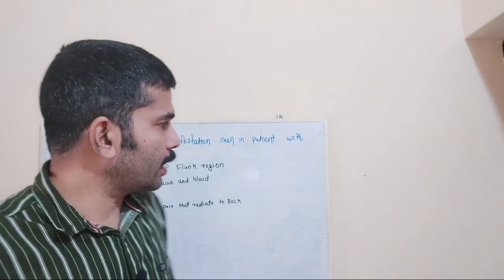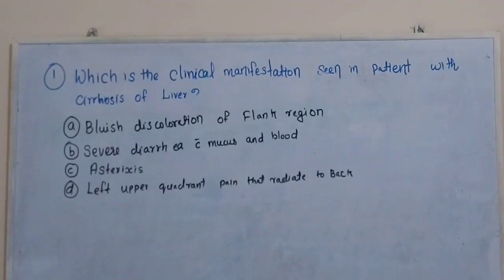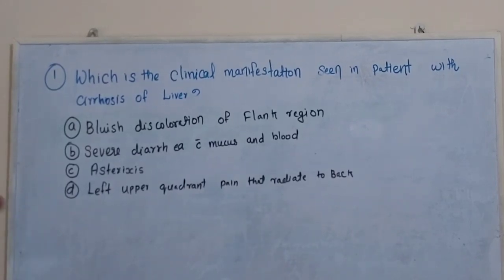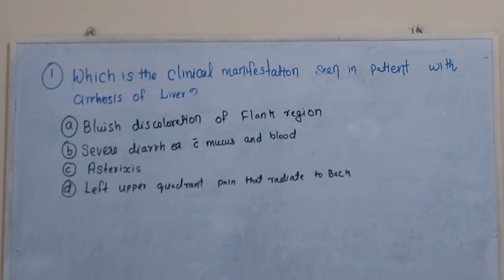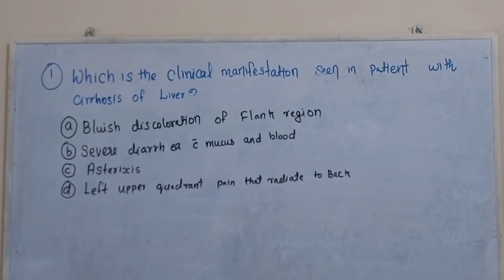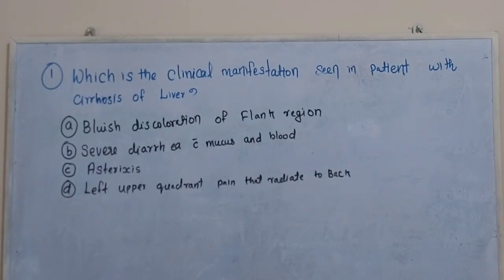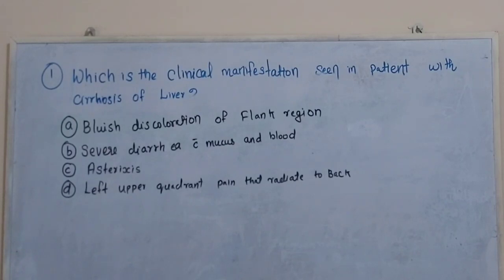Now, the first important previous question: which is the clinical manifestation seen in a patient with cirrhosis of liver? Options: A - bluish discoloration of the flank region; B - severe diarrhea with mucus and blood; C - asterixis; D - left upper quadrant pain that radiates to back. So what is the clinical manifestation done in the patient with cirrhosis of liver?